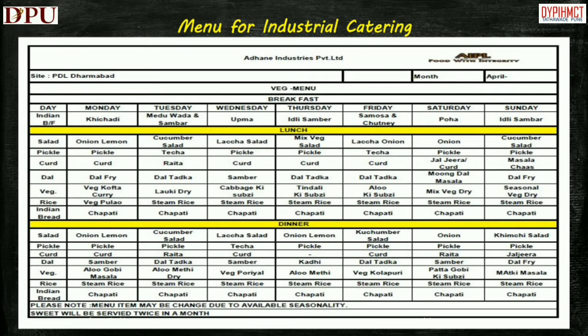Have a look at this industrial menu. This is the actual menu being served in the month of April 2020 at an industrial site. It is clear that food service is done by the outsourced service provider named AIPL. The industrial firm provides food service to its employees on a welfare basis at a very low cost without earning any profit, and AIPL does the food service on behalf of the industrial firm. This simple menu includes three meals: breakfast, lunch, and dinner. It is simple, budget-friendly, and easy to prepare, while having wholesome food in every meal. A note at the bottom indicates that sweet would be served only two times in a month.